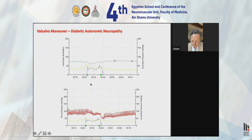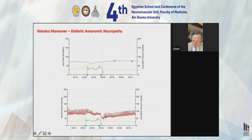In autonomic failure, phase two late never happens — blood pressure just keeps dropping, heart rate doesn't really go up, and afterward, recovery of blood pressure is very slow. There is no vasoconstriction, just floppy blood vessels everywhere, and blood pressure comes up very slowly to eventually reach baseline.